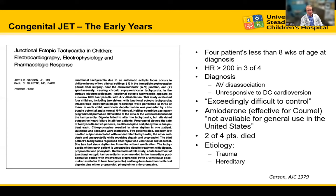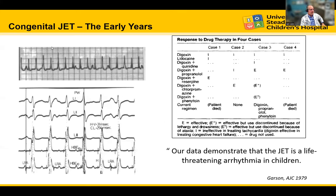Two of the four patients died, and they proposed that JET was due to trauma or was hereditary. Digoxin was always used — here we see digoxin and reserpine, and digoxin and Thorazine. They marked the effective combination of medications, but two patients died despite being effectively managed. They stated: 'Our data demonstrates that JET is a life-threatening arrhythmia in children.' Intracardiac tracings showed His potentials preceding the QRS complexes consistent with JET.